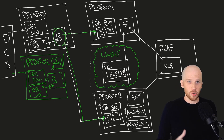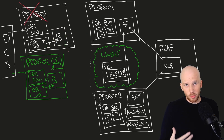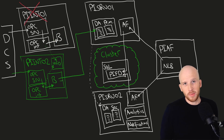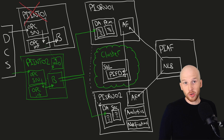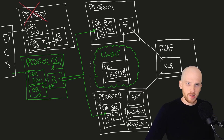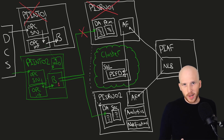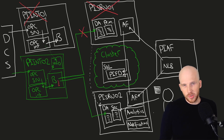If the primary interface goes offline, the backup will start sending data to both collective members straight away. With this whole setup, you'd be able to have up to two failures - one interface and one data archive - and still have zero data loss and 100% uptime for users.